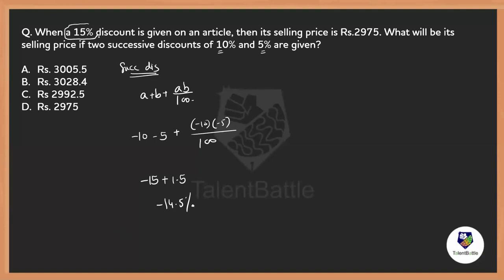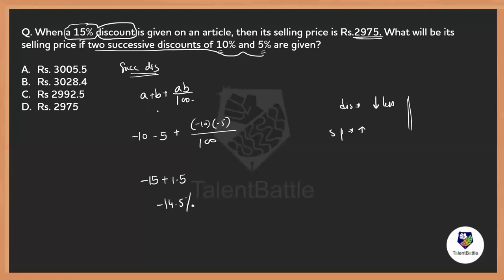When it is a single discount, it gives 15%. But with successive discounts, it gives only 14.5% — less than 15%. When the discount is less, the selling price will be higher than 2975. So the answer must be more than 2975. Observing the options, all are above 2975. Since 14.5% is very close to 15%, the new price should be very close to but slightly higher than 2975 — which points to option C, 2992.5.